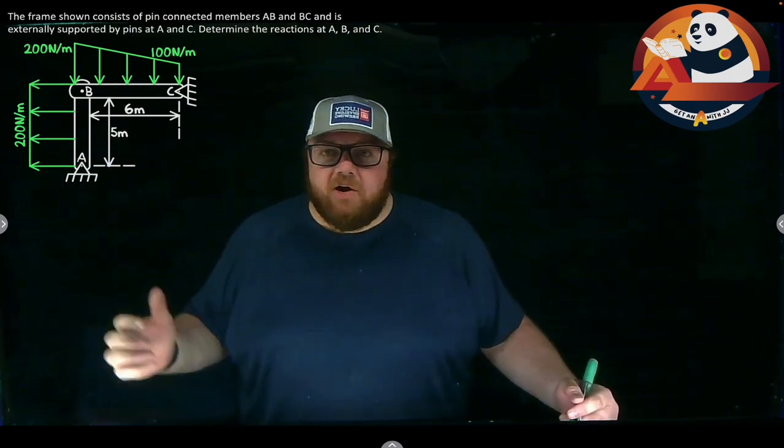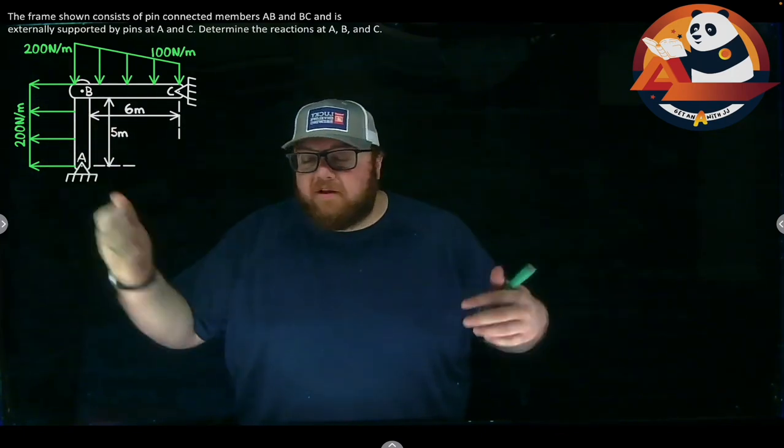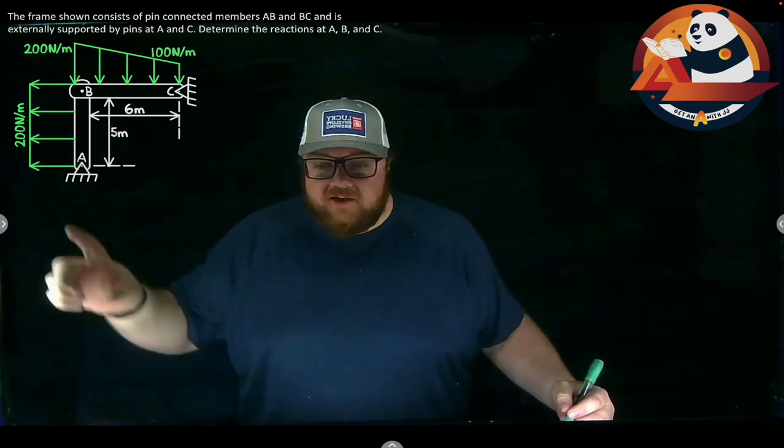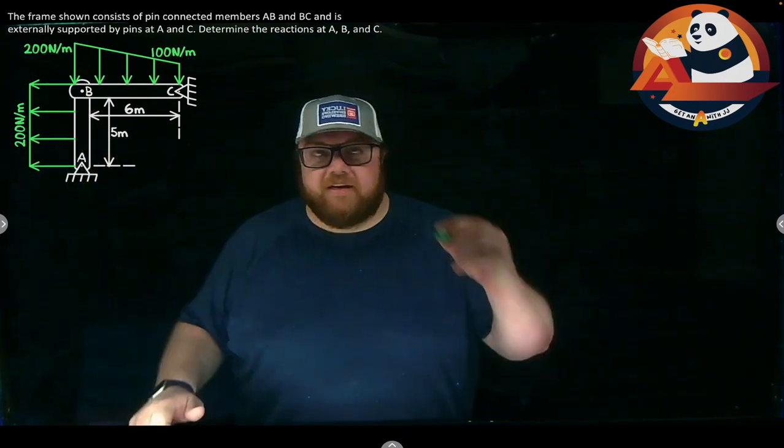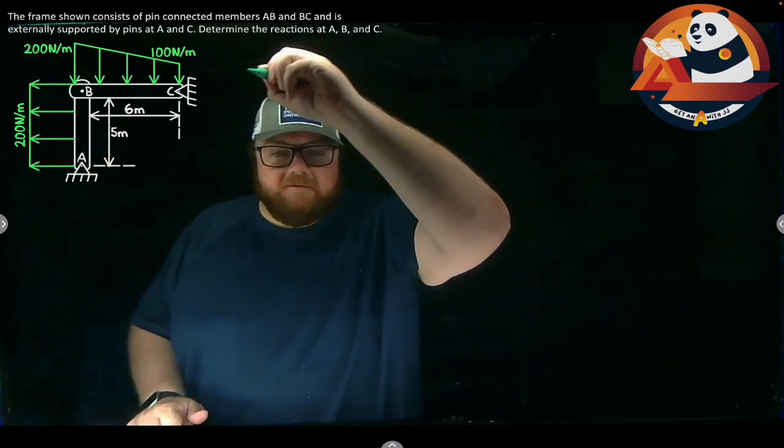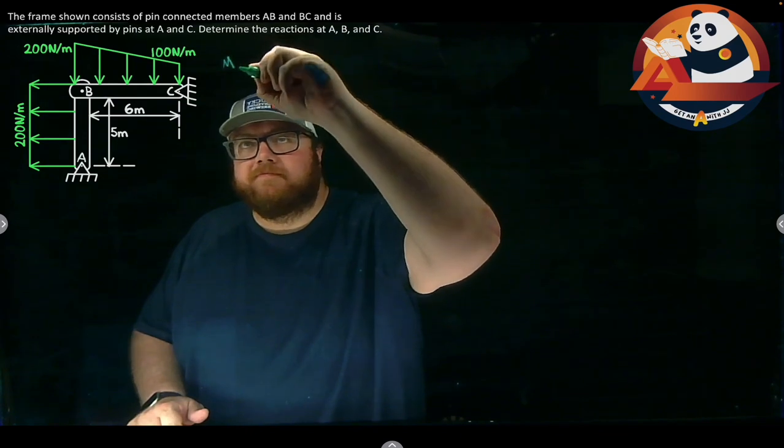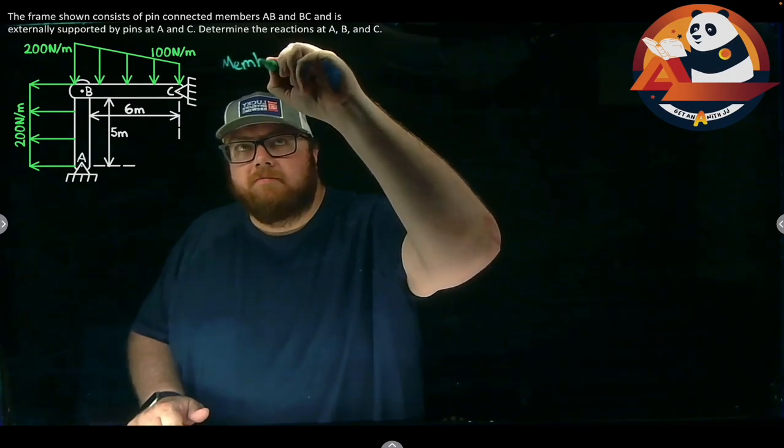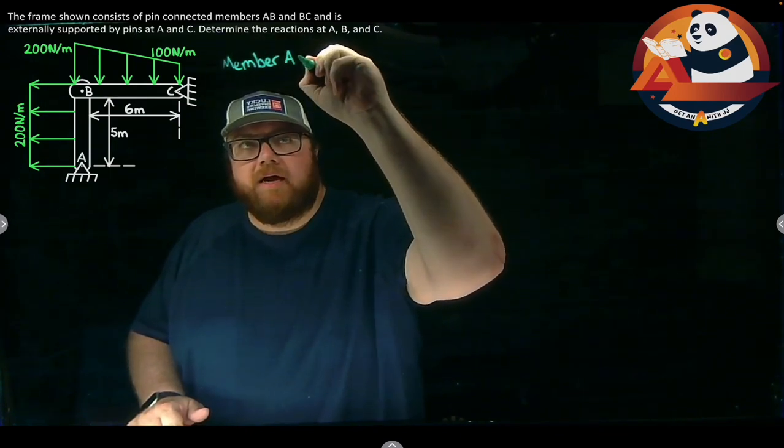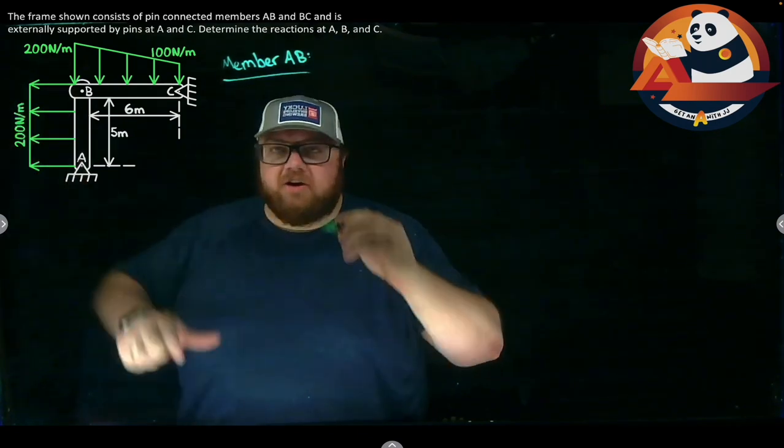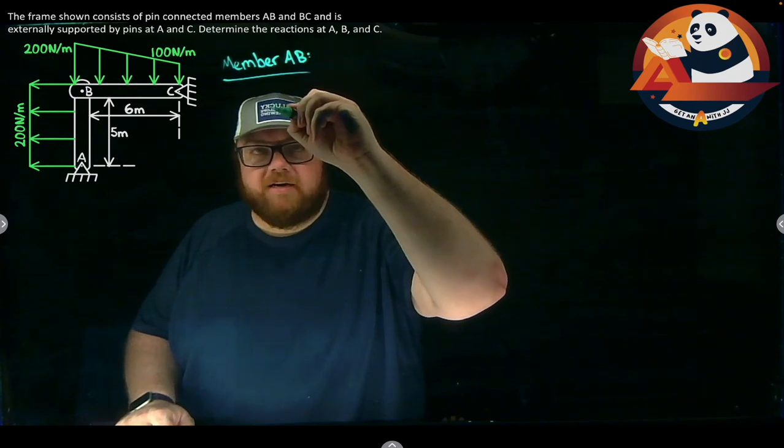That's okay. That happens sometimes. We're just going to jump in and say, let's just go straight to exploding the frame and looking at individual members. So let's do member AB first. Member AB is what we want to start out taking a look at. So that's just my vertical member. I'll draw it straight up and down.